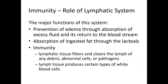The immune system often includes three systems: the lymphatic, which we'll briefly discuss; the integumentary, which serves as that first layer of protection on the outside; and the cardiovascular, which contains white blood cells and other things that allow us to be more specific in terms of immunity.